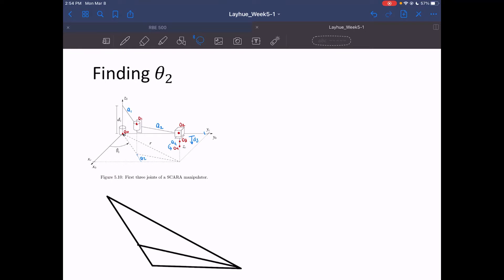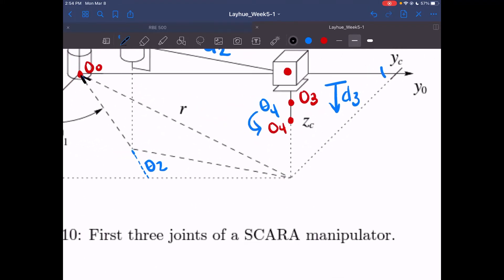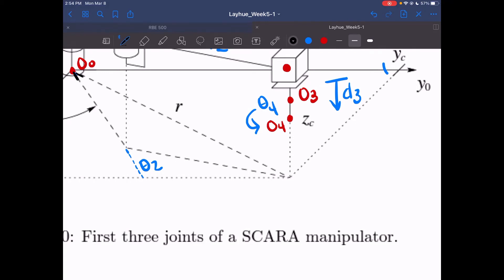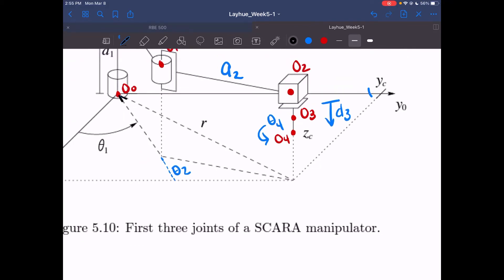We will begin by finding theta2. When we're typically finding angles of triangles, we do so using certain properties, such as sine, cosine, tangent, or law of cosines. But here with those, they require side lengths—your opposite, your adjacent, hypotenuse. If we look at the triangle that contains theta2, we don't really explicitly have those side lengths.